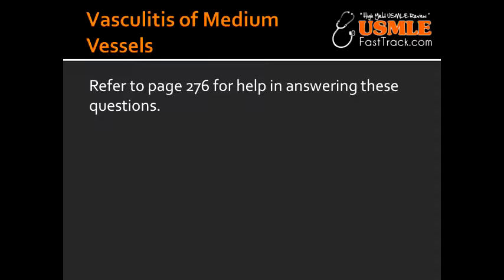Describe how intermittent claudication may lead to gangrene. Because of the vasculitis, there is not enough blood supply going to the leg. For this reason, you would first have intermittent claudication, and because of the lack of blood supply, it will end up killing the tissue, therefore resulting in gangrene.